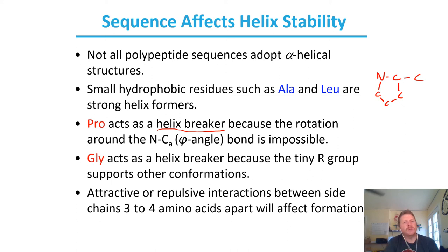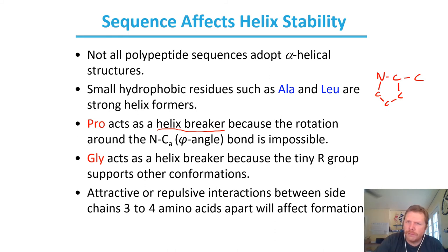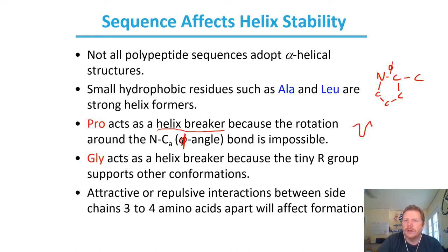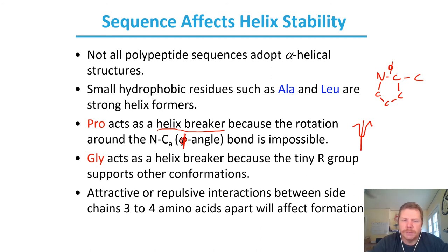Does that mean it's absolutely impossible? No, it doesn't, but it's just unlikely. The bond that's restricted is not the peptide bond — it is instead the phi angle. Glycine also acts as a helix breaker because that R group is entirely too small. Glycine is just a hydrogen, compared to alanine which is a methyl group — slightly larger.